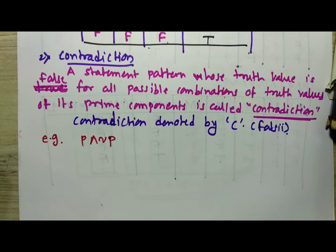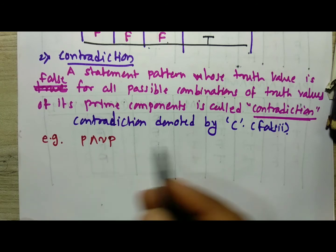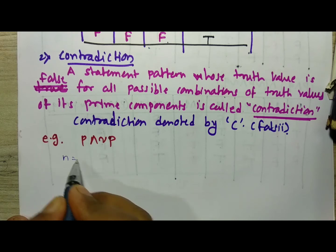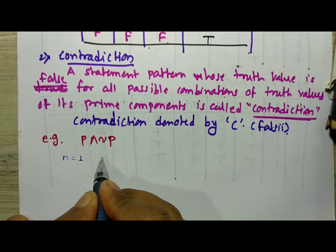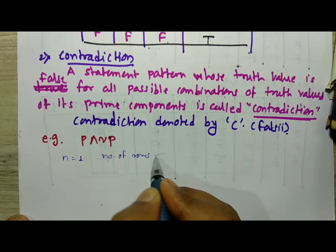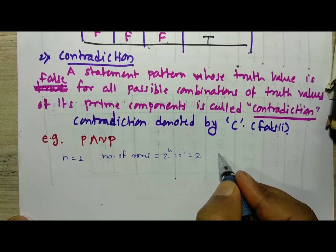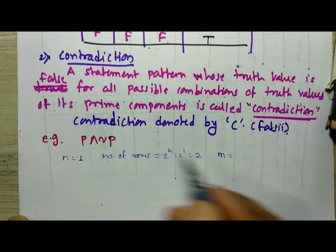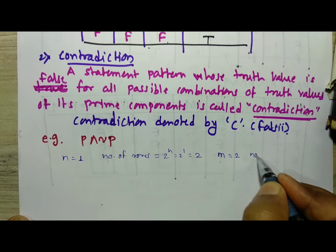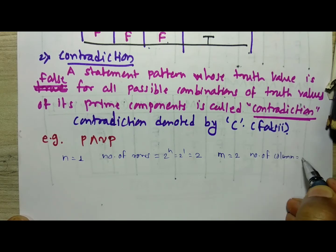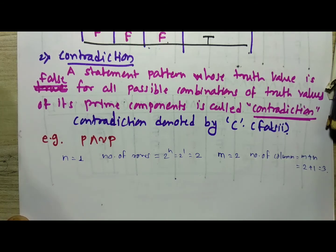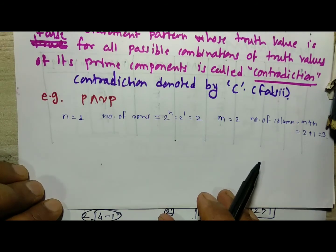For this example, n is equal to 1, so the number of rows is 2 raised to 1, which equals 2. The number of connectives m is 2 (negation and and), so the number of columns is m plus n, that means 2 plus 1, which is 3 columns. We find the truth table for P ∧ ¬P with 3 columns and 2 rows.